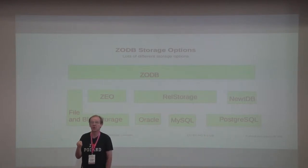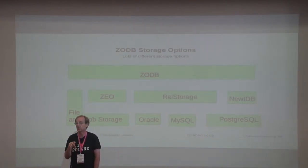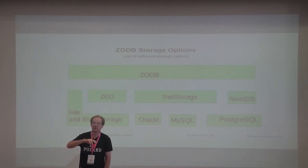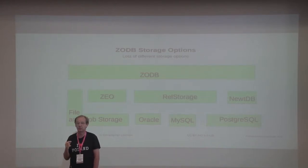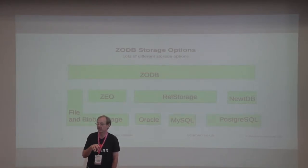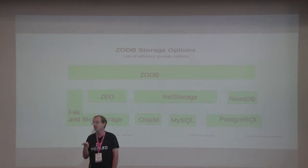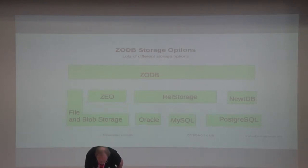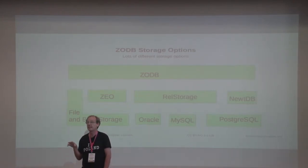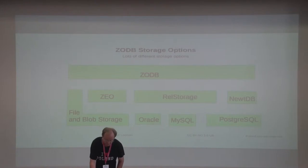How do you store data? For a single process, you store data either in a file database or in a blob. If traffic increases, you need a client-server setup using the ZEO client-server, where the ZEO server stores information in file storage or blob storage. If you want to store in a relational database, you can use RelStorage on MySQL, Postgres, or Oracle. Or you can use NewtDB, which is specifically for PostgreSQL and uses its indexes more effectively. You get lots of choices.